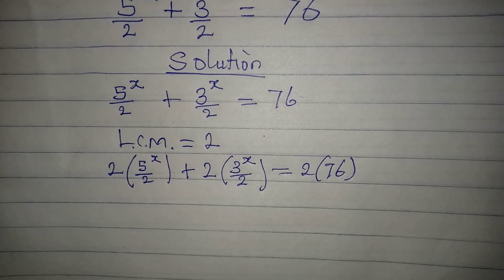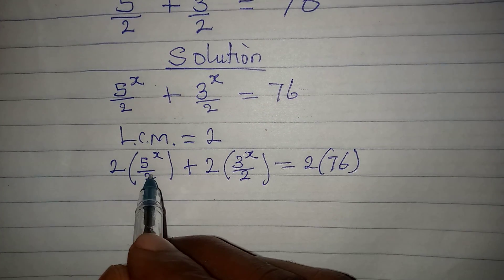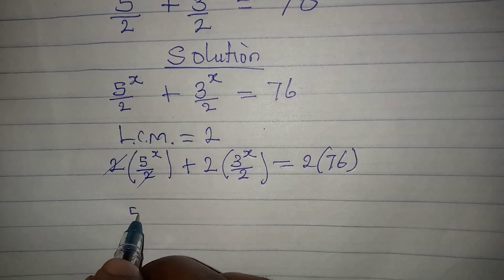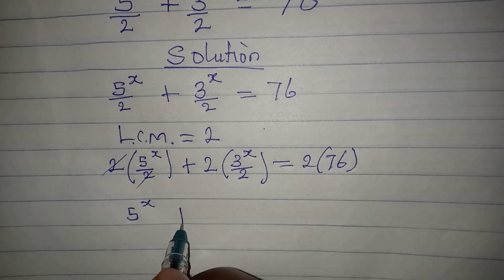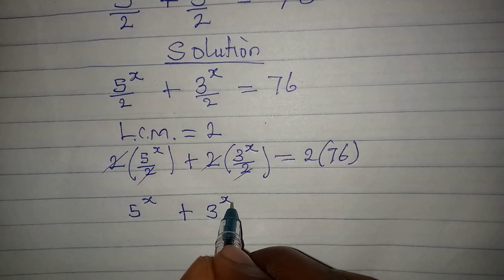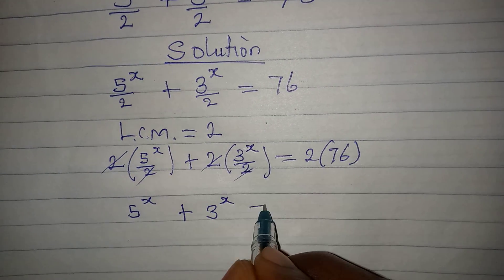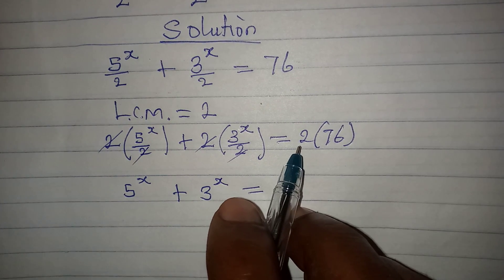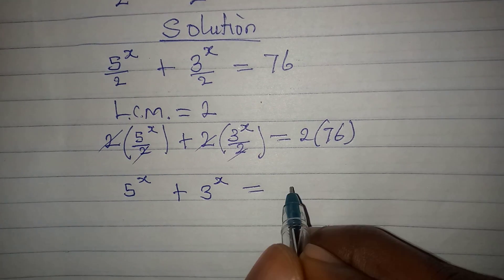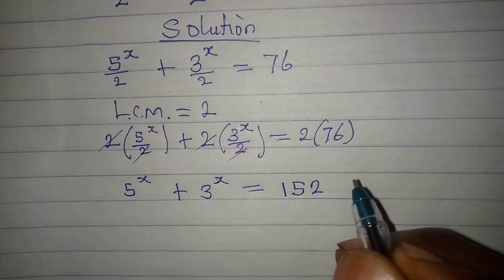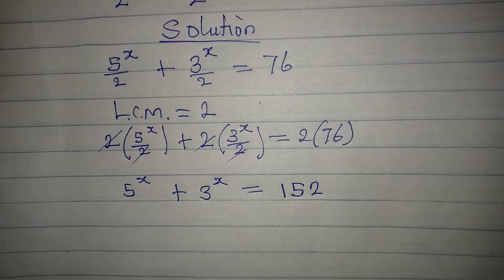The LCM has to multiply everything. The 2s cancel out, so we get 5 to the power of x plus 3 to the power of x equal to 2 times 76, which gives us 152. Now, remember we're trying to solve for the real solution.